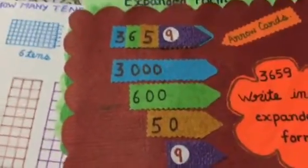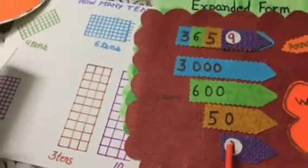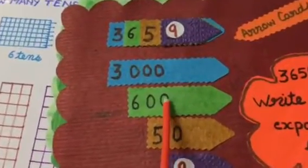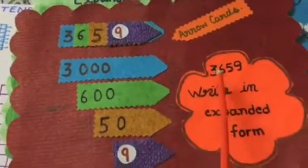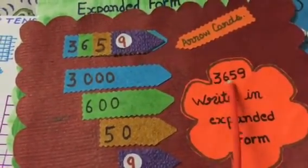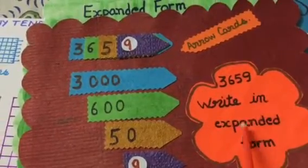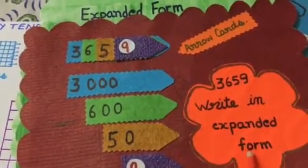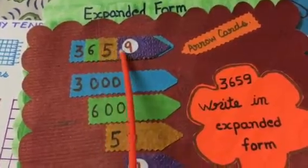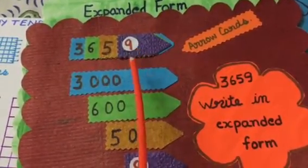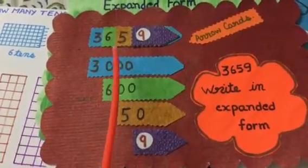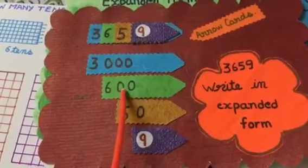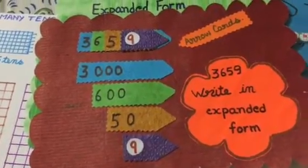When we are using arrow cards, these are arrow cards of different values — 1's, 10's, 100's, 1000's. This number is 3659 and we have to write it in expanded form. When we open it, this becomes the expanded form: 3000 plus 600 plus 50 plus 9.